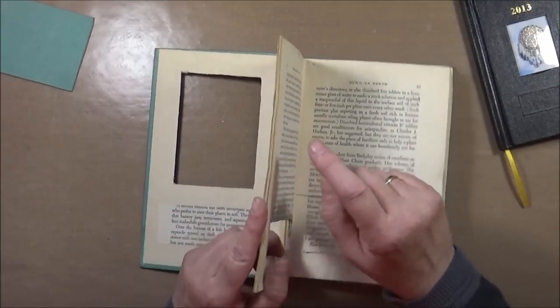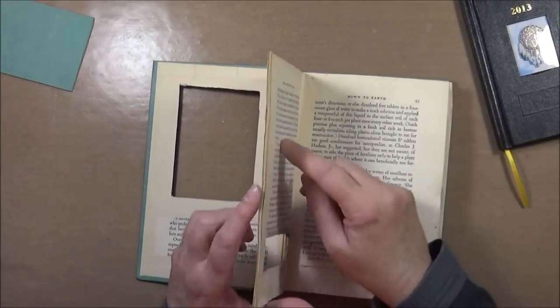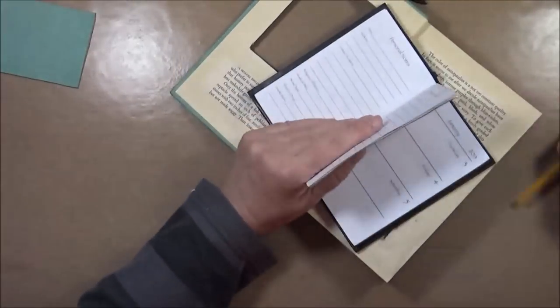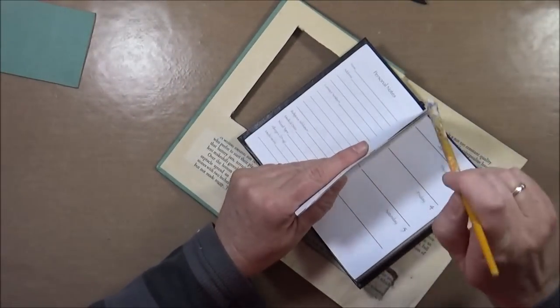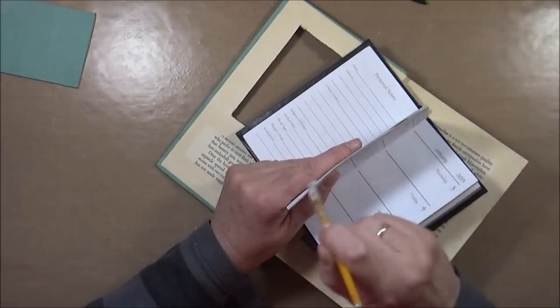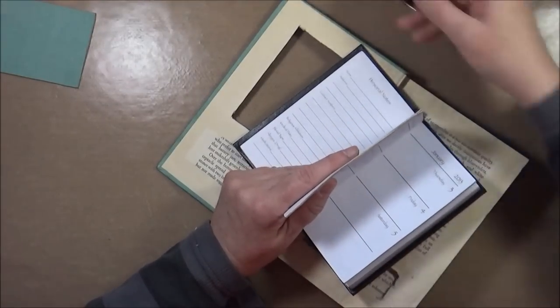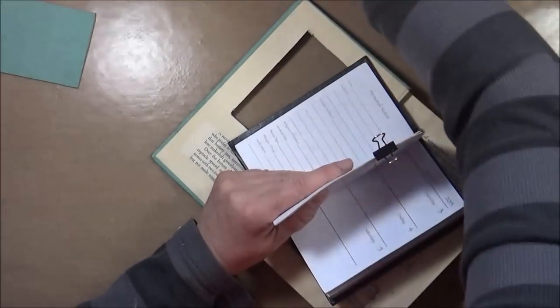Then I created a very thick area here in the very front where I glued about 20 pages together. Now, when you do that, just add glue to the edges like you see me do here, plenty of it, and then clamp it and let it dry really well.